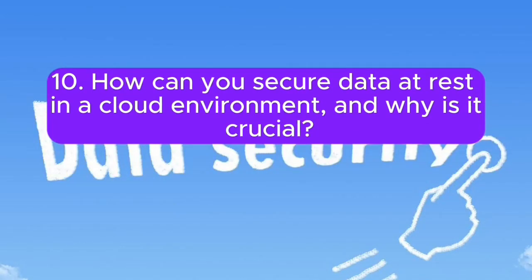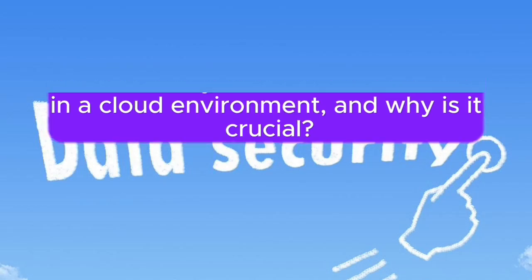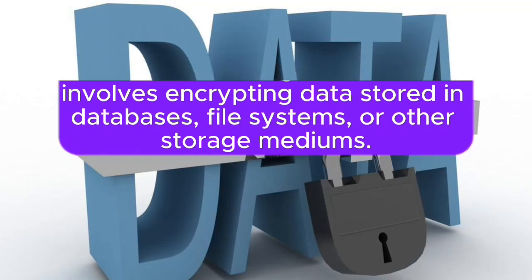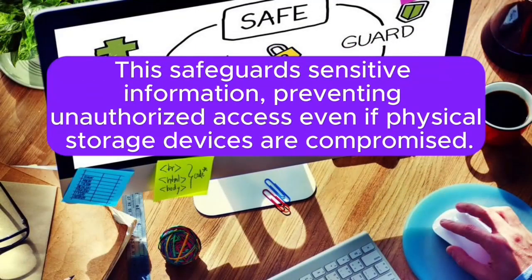10. How can you secure data at rest in a cloud environment, and why is it crucial? Securing data at rest involves encrypting data stored in databases, file systems, or other storage mediums. This safeguards sensitive information, preventing unauthorized access, even if physical storage devices are compromised.